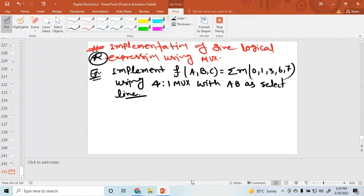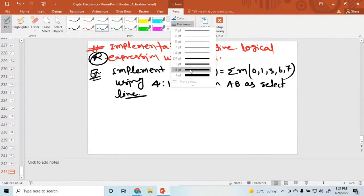Where a, b is as a select line. So this is your question. Implement this function using 4 to 1 MUX. So how to solve this question?